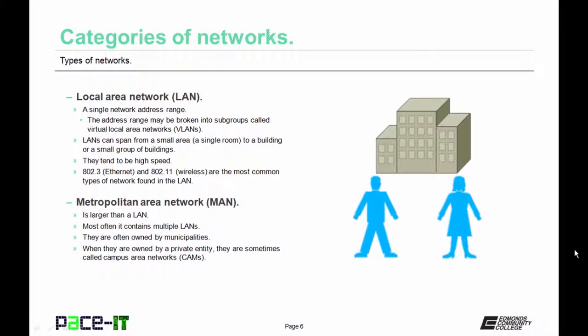The first category is the local area network, the LAN. This is composed of a single network address range. That address range may be broken into subgroups called virtual local area networks, VLANs, but they're still all part of the same network address range. LANs can span from a small area like a single room to a building or small group of buildings. LANs tend to have the highest speed of any of the categories. 802.3 Ethernet and 802.11 wireless are the most common types of networks found on the LAN.